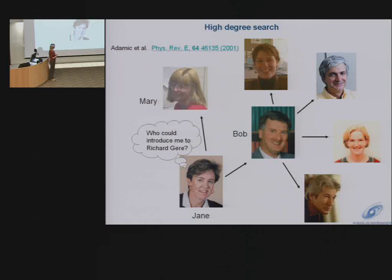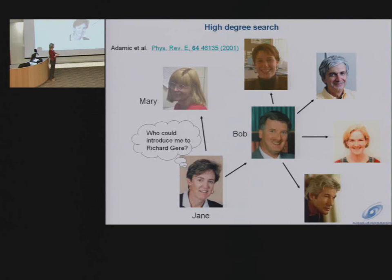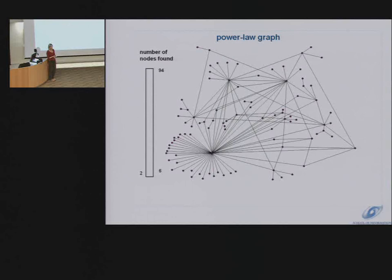And finally there's the high-degree search — here's Jane, she's just watched Pretty Woman and she'd really like to meet Richard Gere. She could flood her request to all her friends, but that's wasteful. So she'd like to ask just one person. She could ask her friend Mary, but Mary's kind of shy and doesn't know too many people. Or she could ask Bob, who is really outgoing, knows all these people, and is more likely to know Richard Gere — or someone who does. This high-degree search works best in power law networks, where there's a great imbalance in the number of links. These are networks we see repeatedly: the web, the internet, and peer-to-peer file sharing networks are all power law. You have extremely well-connected hubs but also many nodes with just one connection.